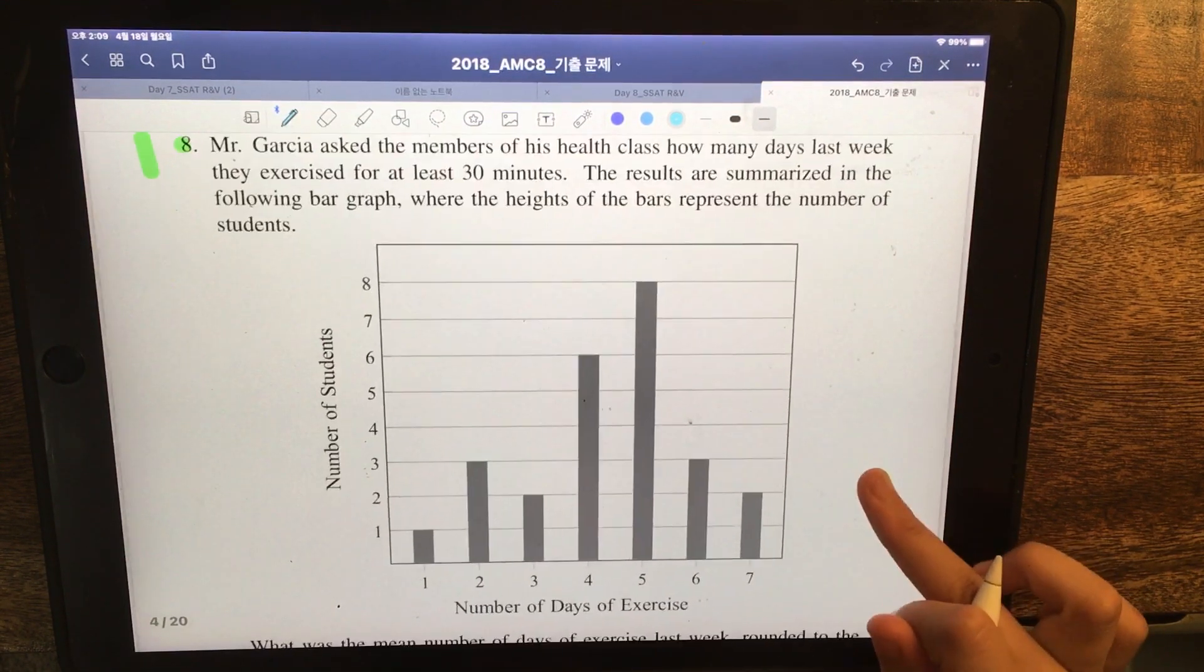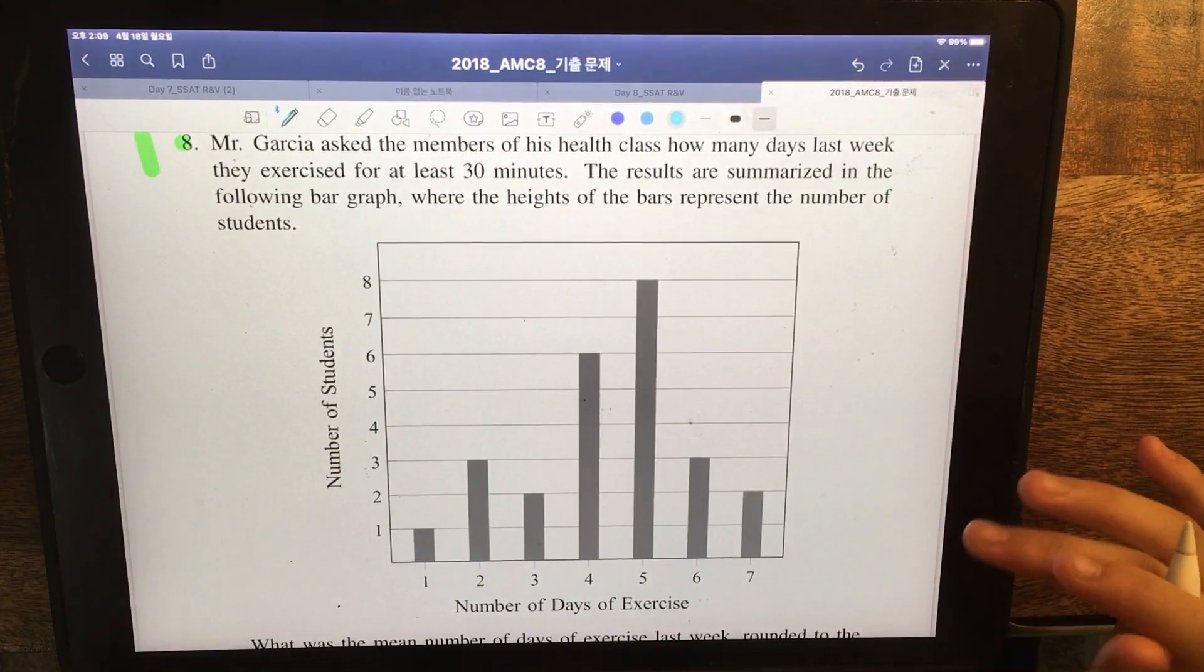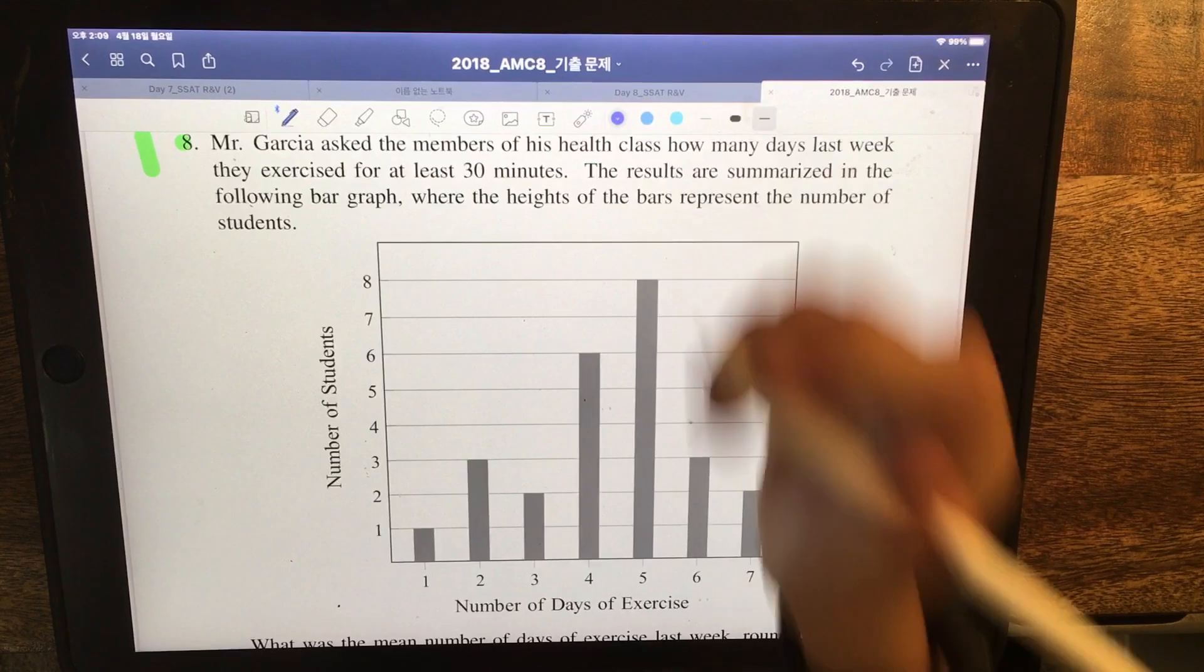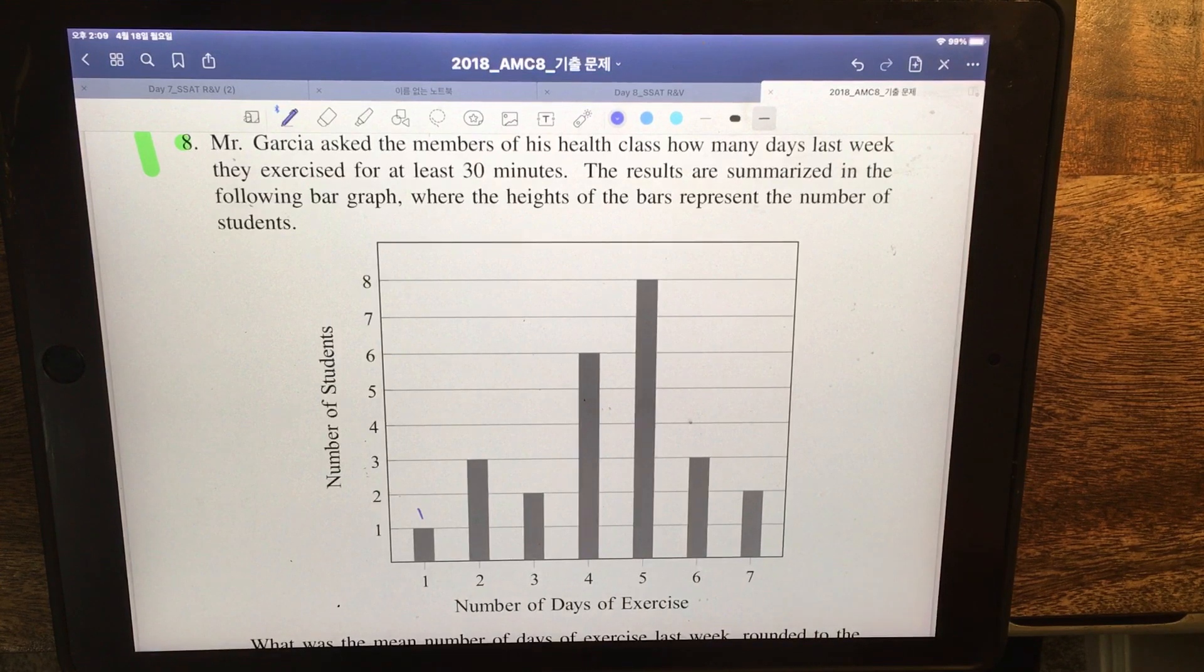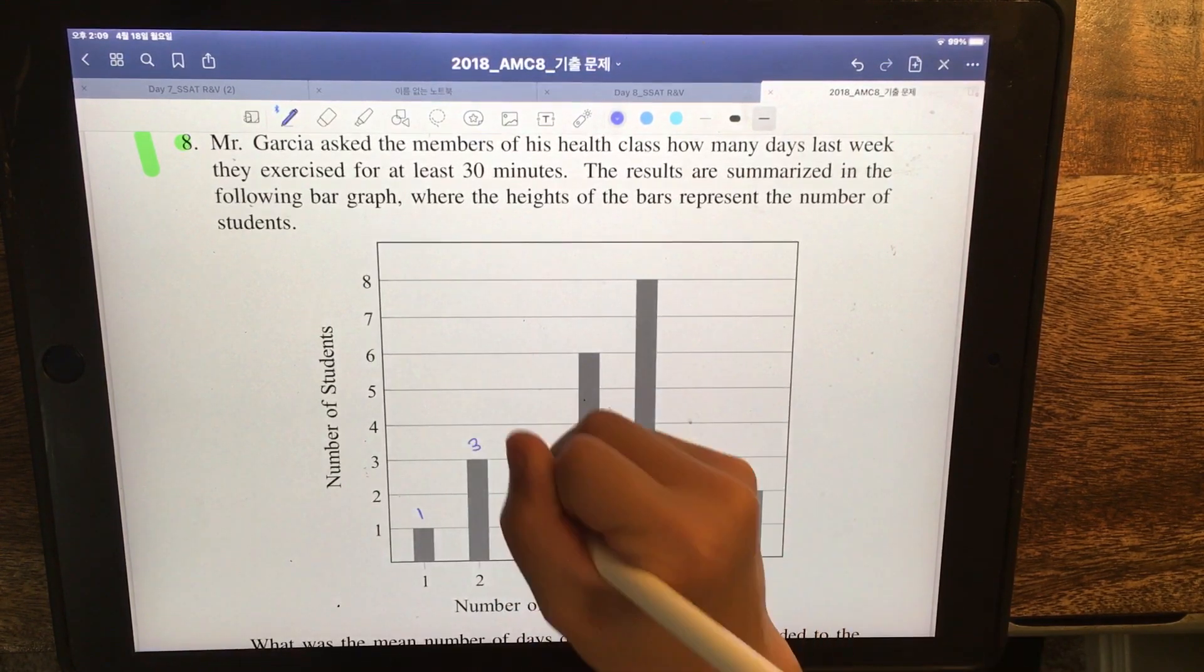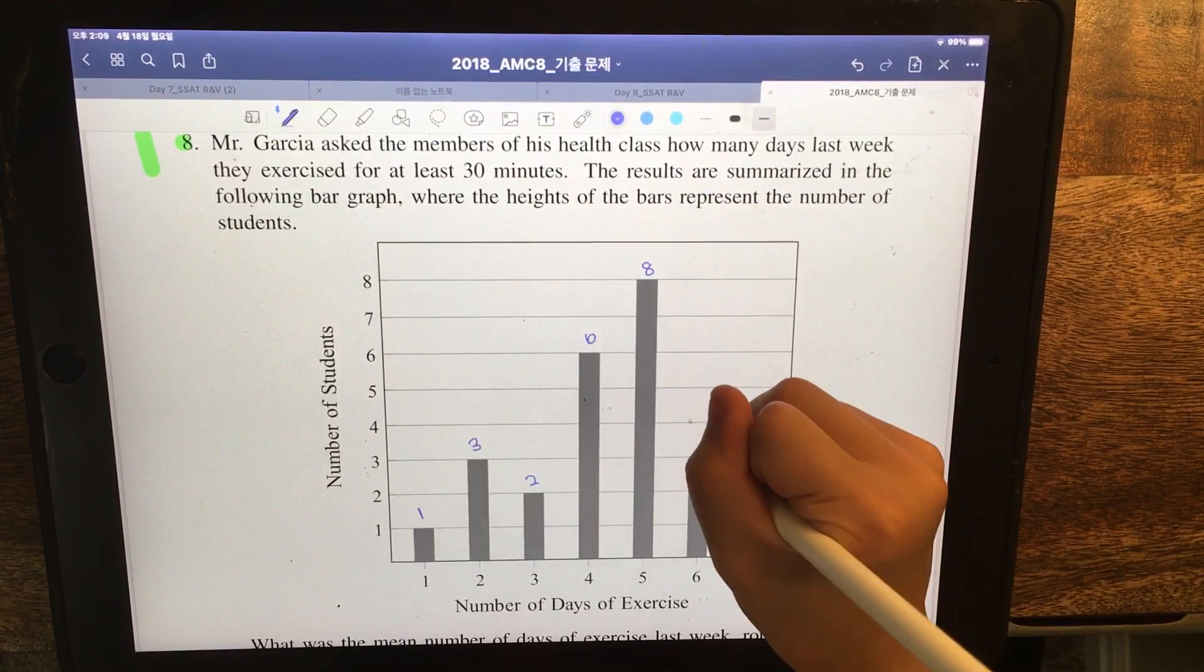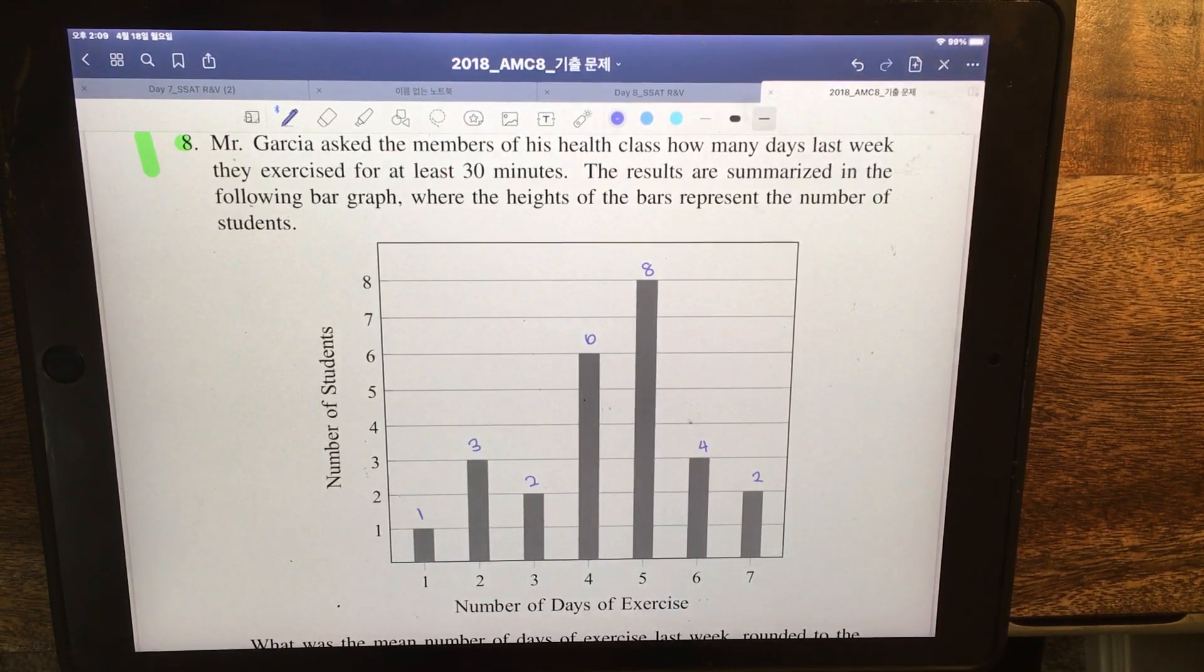What I see in this bar graph is how many students exercised for at least 30 minutes last week. Day 1, only 1 student accomplished the task. On Day 2, 3 of them. Day 3, 2 of them. Day 4, 6 of them. Day 5, 8 of them. Day 6, 4 of them. Day 7, 2 of them accomplished the task.